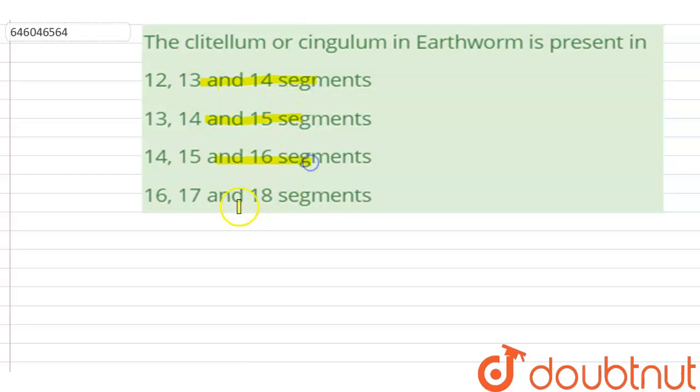The options are 12, 13, and 14 segments; 13, 14, and 15 segments; 14, 15, and 16 segments; and 16, 17, and 18 segments. So the first body segment in earthworm is called as peristomium.